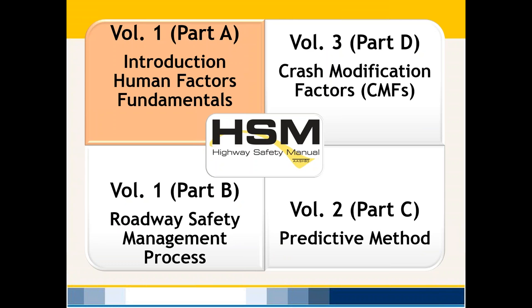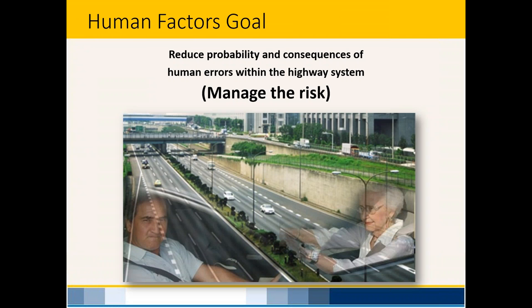Part A — the Human Factors Guide — provides factual information and insight into how roadway users perceive roadway attributes. The goal is to manage risk. We'd love to implement this into our design processes down the road. For now, if we can get everyone acquainted with Parts C and D, later on we can use the Human Factors Guide to implement policy shifts.